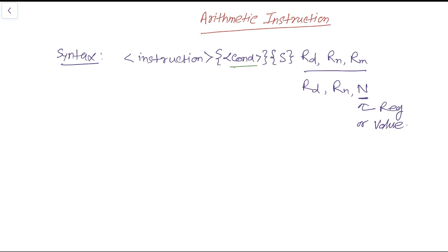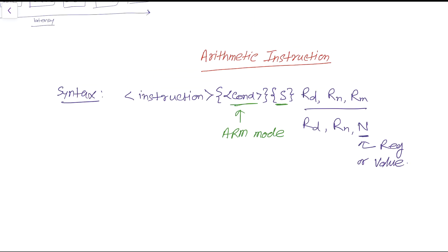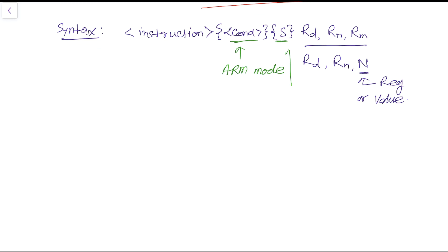The condition and the S suffix are optional. The condition can be applied in ARM mode but does not work in Thumb mode. The S suffix, if present, updates the status flag register. So the full form is: instruction, condition, S suffix, destination register, and two source registers.